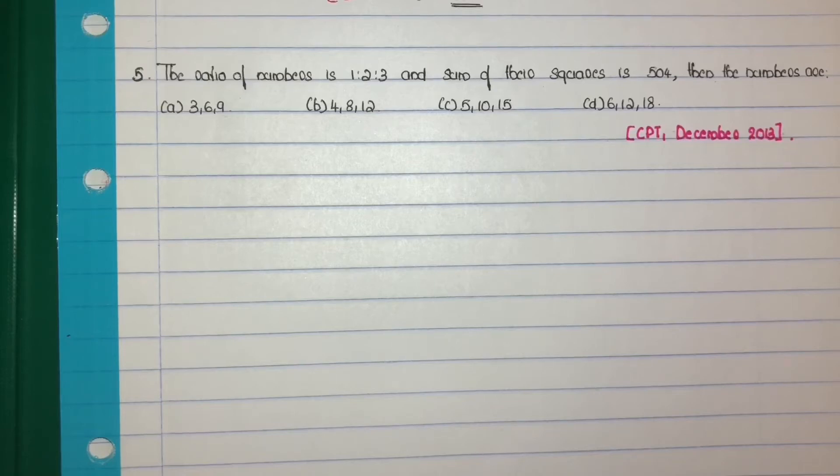The ratio of numbers is 1 is to 2 is to 3 and sum of their squares is 504. Then the numbers are.